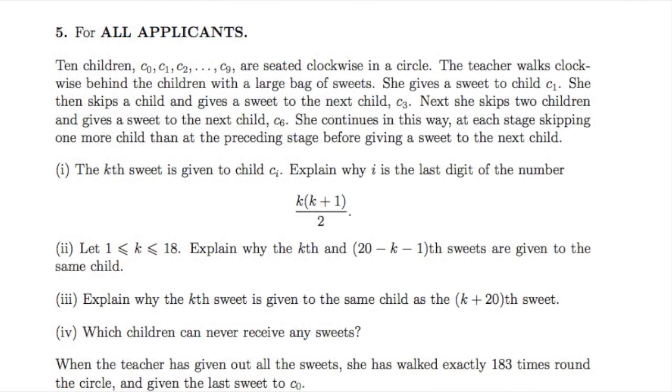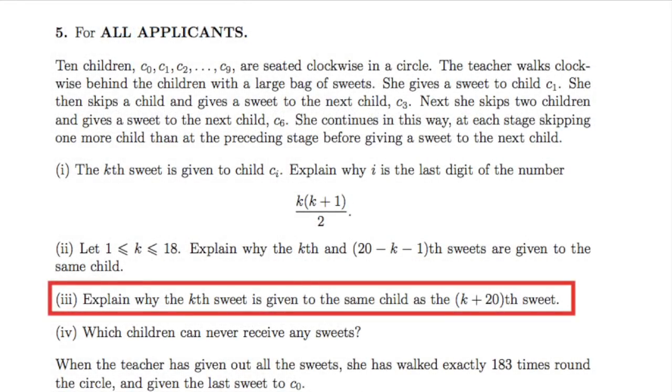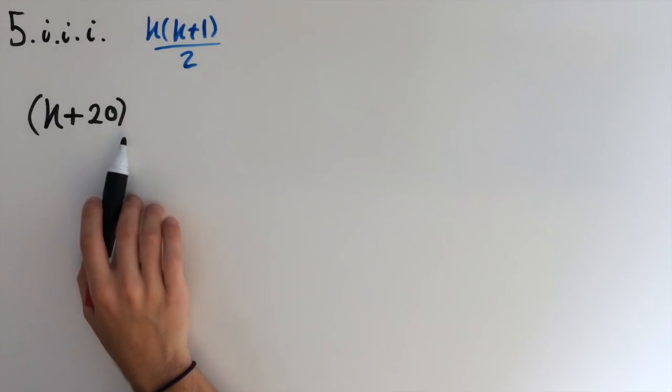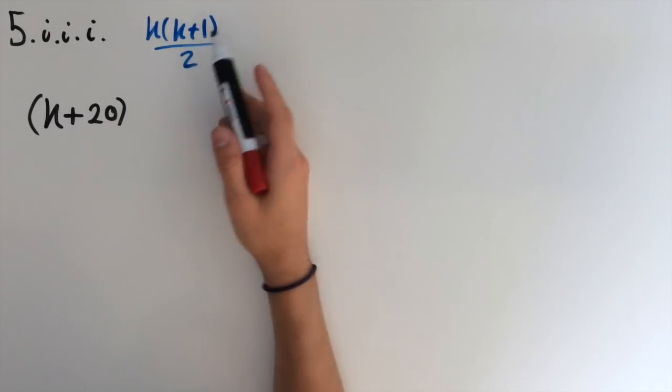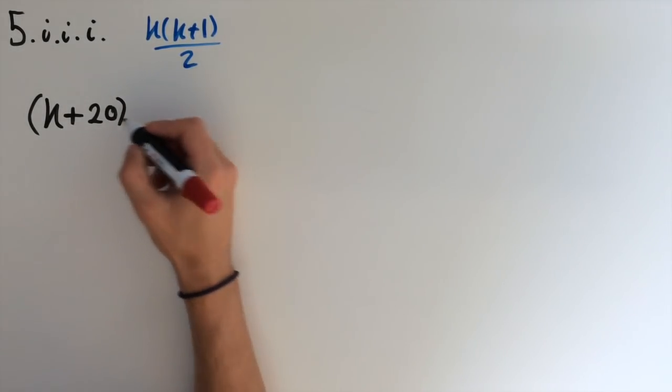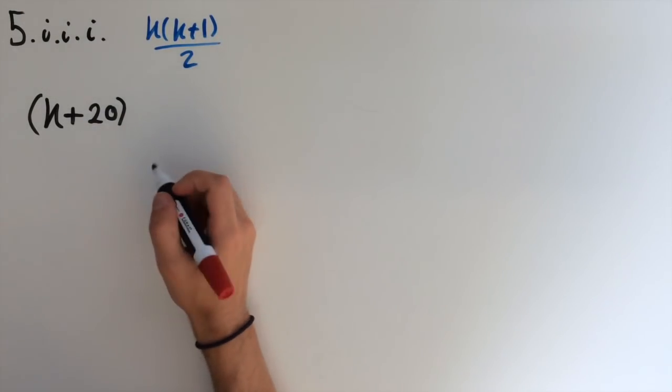For part iii, we need to explain whether kth sweet is given to the same child as the k plus 20th sweet. I'm going to use the same approach as we just did for question ii. There's other ways to go about this, but I think this is the most straightforward way. So we need to show that the k plus 20th sweet is given to the same child as the kth sweet. Now we're just going to use the same method as before. So we're going to plug k plus 20 into this equation here.